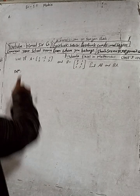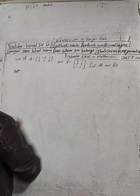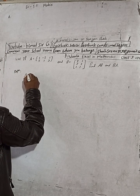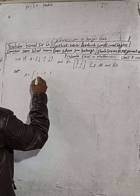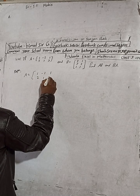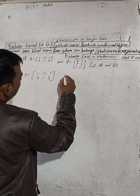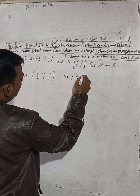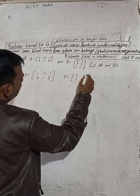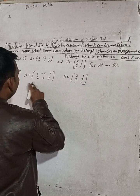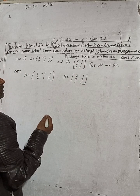Question 4a: if A is equal to this and B is equal to this, find AB. A is equal to 1, -2, 1 and 2, 1, 3. B is equal to 2, 1, 3, 2, 1, 1. These two are the given matrices and we have to find AB.